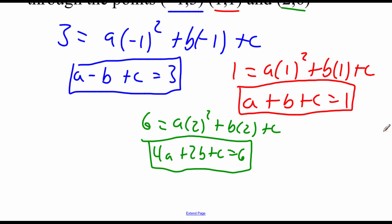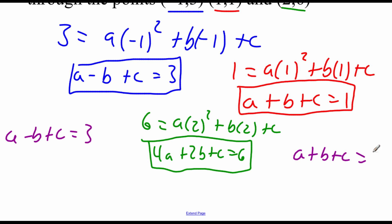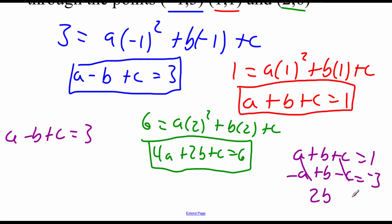For row echelon form, we need our top equation to have a leading coefficient of 1 on the a. So I'm going to start with the blue equation: a minus b plus c equals 3. Working with the red equation to build the second piece: a plus b plus c equals 1. We need to get rid of that a, so I'll take the top equation times negative 1, giving negative a plus b minus c equals negative 3. Adding those together, the a's cancel and the c's cancel, giving 2b equals negative 2. Dividing both sides by 2, we get b equals negative 1.